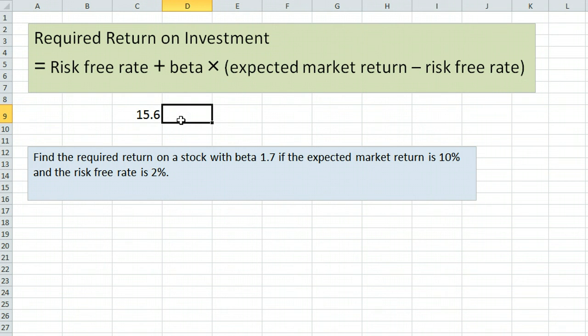Just to show the percentage form, if we do equals the risk-free rate, 0.02 for 2%, plus the beta, 1.7, times the expected market return, 0.10 for 10%, minus the risk-free rate, 0.02 for 2%. You'll notice that we get 0.156, which is the same answer, 15.6%.